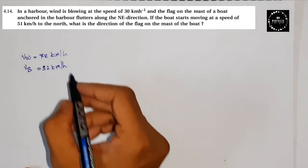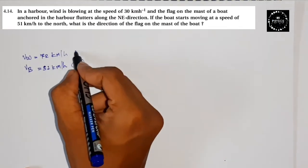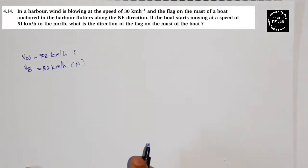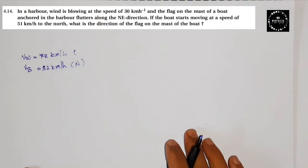To the north, okay, in which direction? In which direction is the flag fluttering? Northeast direction. What is the direction of the flag on the mast of the boat? Direction of the flag means the angle we need to define, theta or beta, whatever you want to take.